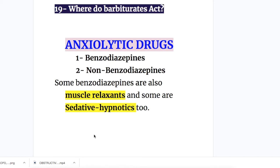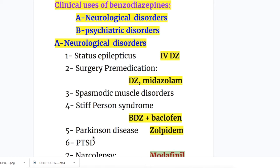The anxiolytic drugs may be benzodiazepines or non-benzodiazepines. We'll mainly discuss benzodiazepines. Clinical uses of benzodiazepines — they may be used in neurological disorders or psychiatric disorders. Neurological uses: number one, status epilepticus — the drug of choice is diazepam given IV. Number two, surgical premedication — preferred drugs are diazepam and midazolam. Number three, spasmodic muscle disorder and muscle spasms.